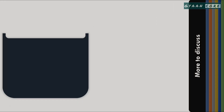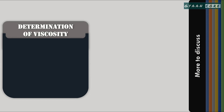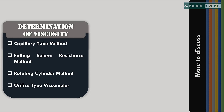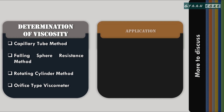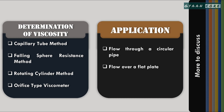There are several experimental methods of determination of viscosity: the capillary tube method, falling sphere resistance method, rotating cylinder method, and orifice type viscometer. These will be elaborated when we come up with the lecture on viscous flow. There we will also discuss the application of viscosity. See you soon with the new topic.